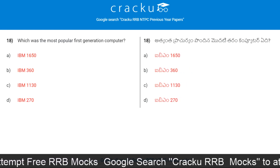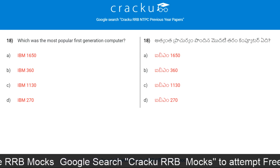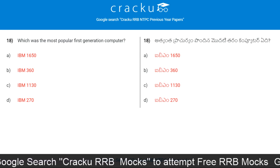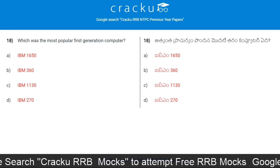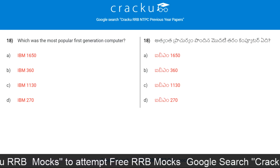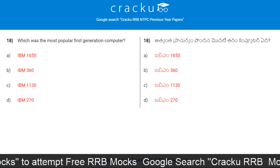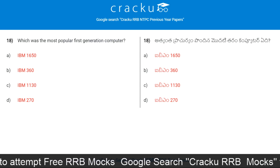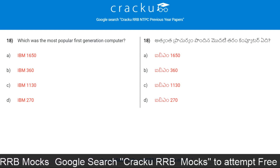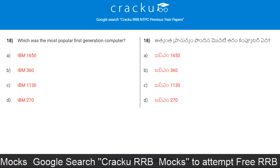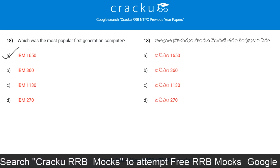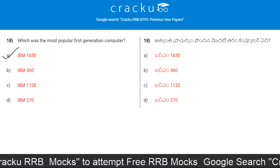Next question. Which was the most popular first generation computer? IBM 1650, 360, 1130, or 270. The correct answer is Option A, IBM 1650.